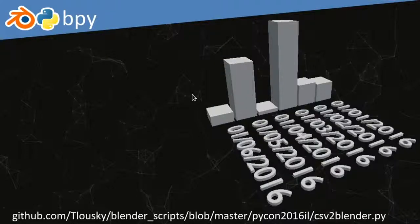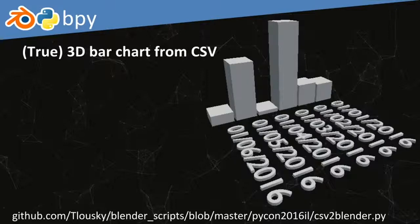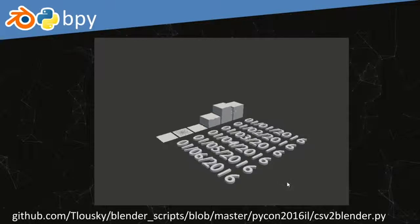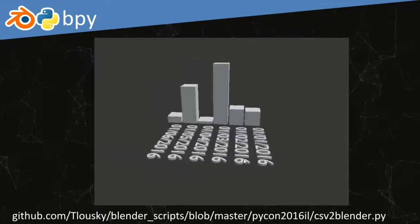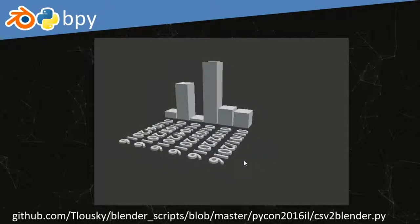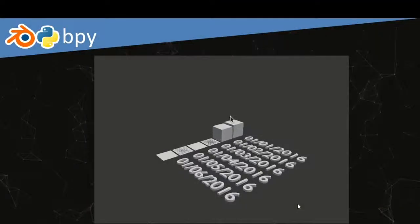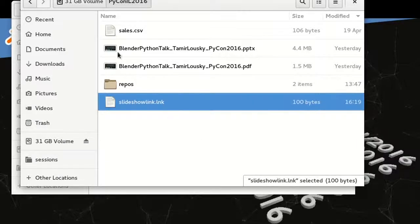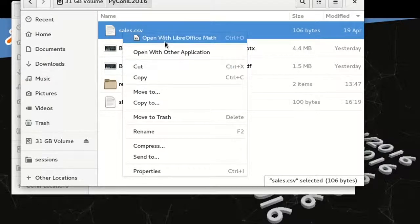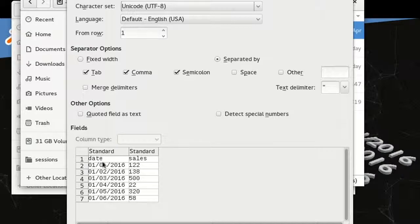Let's see another example. This time I want to import a CSV file and generate a 3D chart from it that is also animated — every one of the bars representing values in the CSV is going to rise up. This is a real 3D chart. The CSV file looks very simple: it has dates and sales as simple integer values.